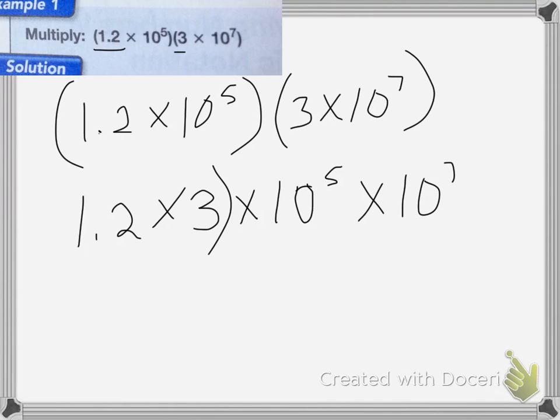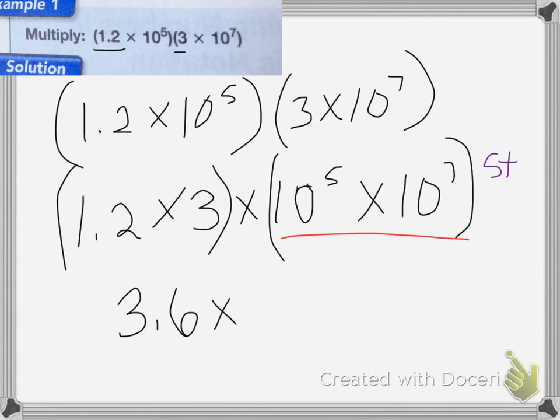I'm going to do 1.2 times 3 first. So 1.2 times 3 equals 3.6, and then it's going to be times this amount here. Now when I have 10 to the 5th power times 10 to the 7th power, I'm going to add 5 plus 7, which equals 12. So it's going to be 3.6 times 10 to the 12th power.